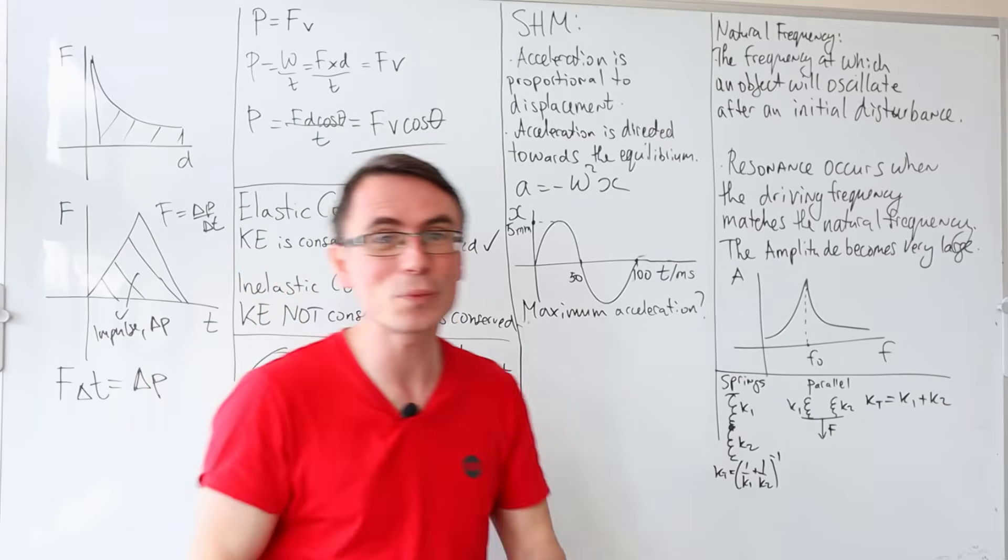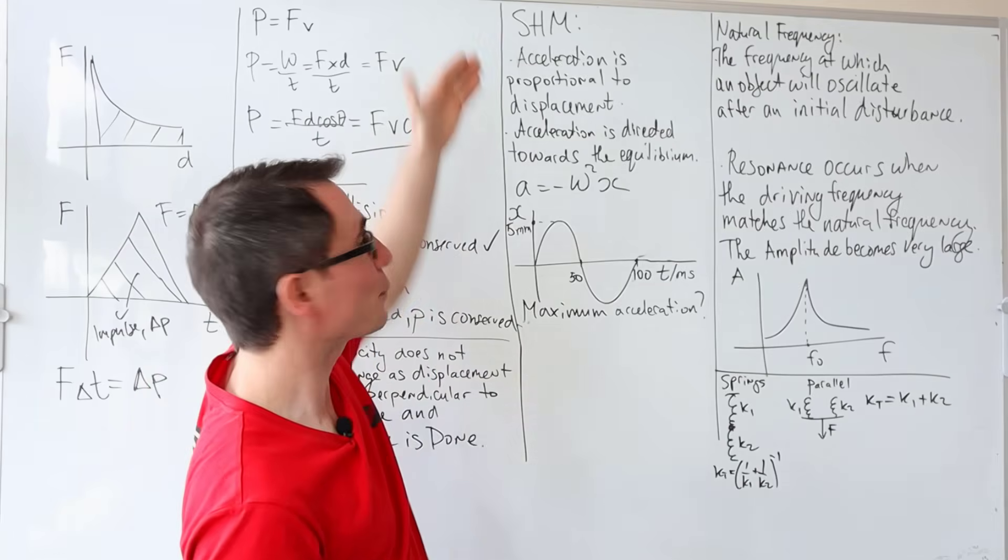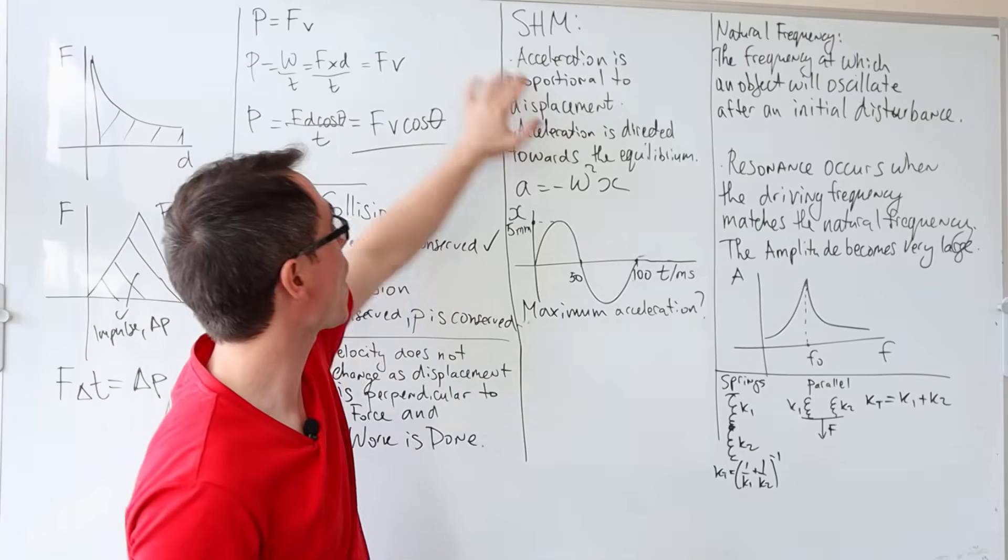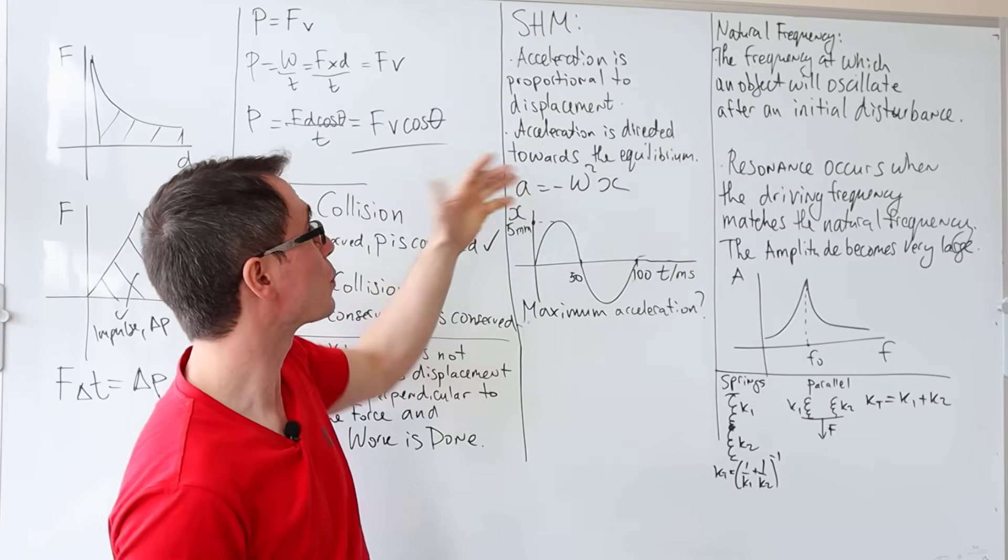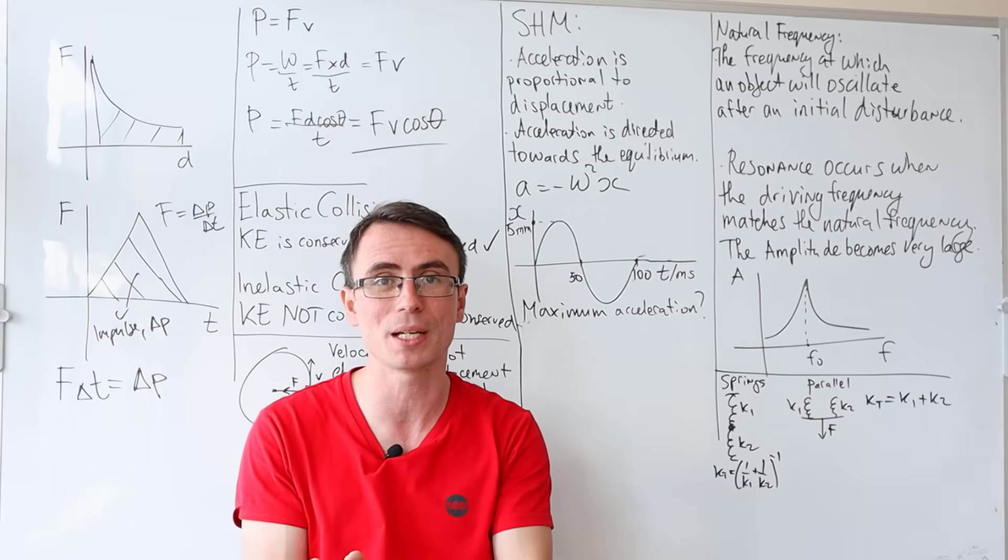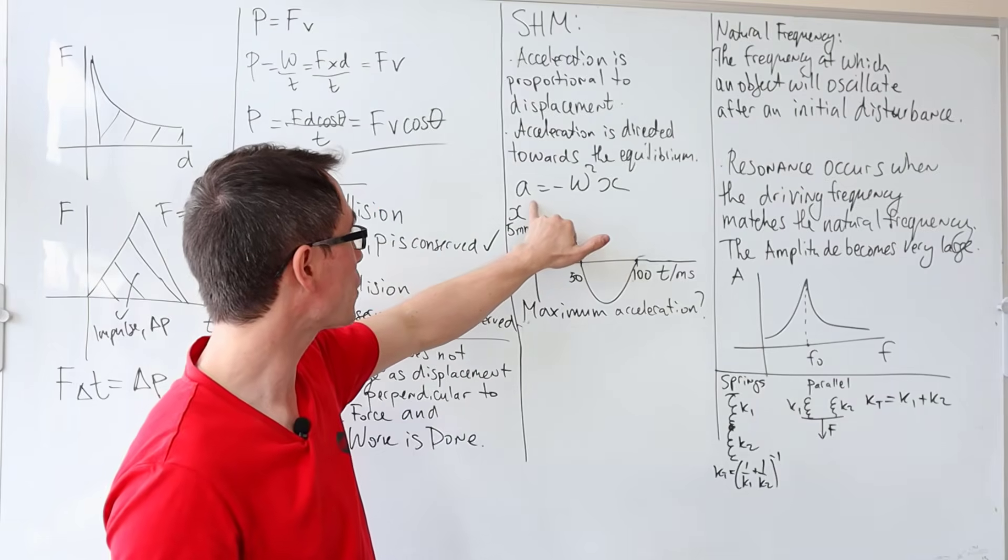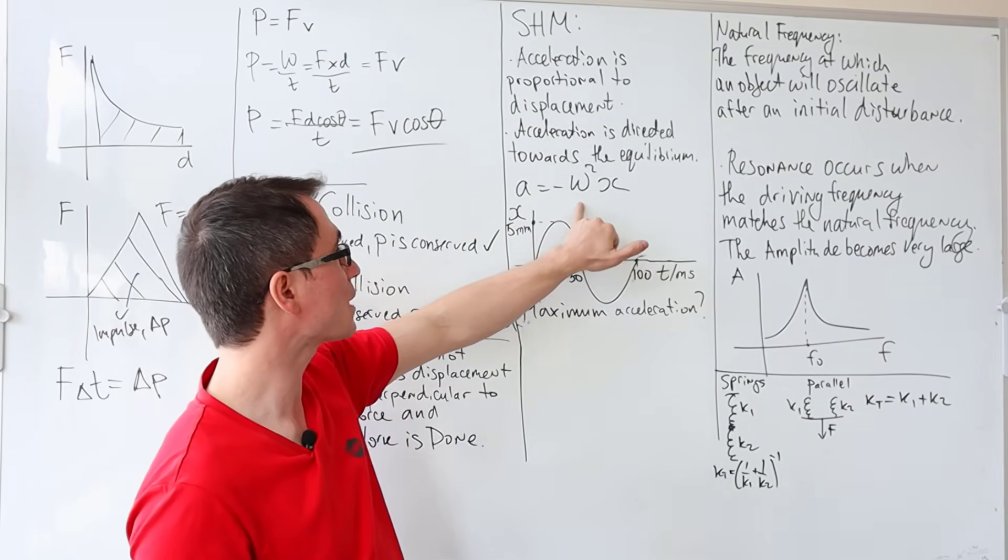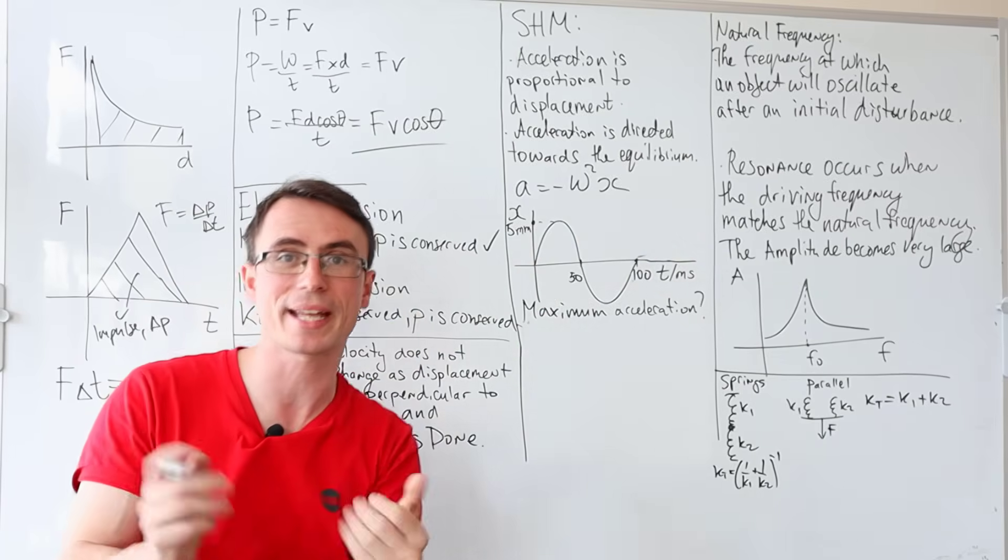The next one is really important. The conditions for simple harmonic motion are that the acceleration is proportional to the displacement and it's directed towards the equilibrium. The defining equation is that a = -ω²x.